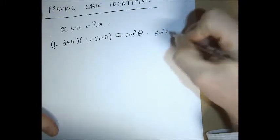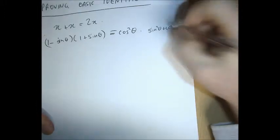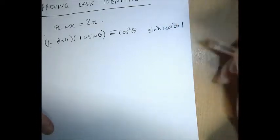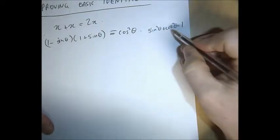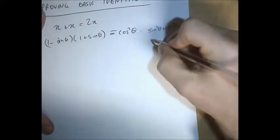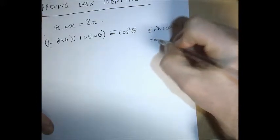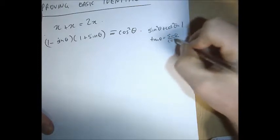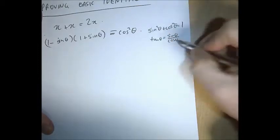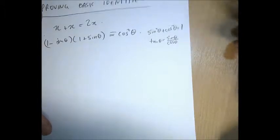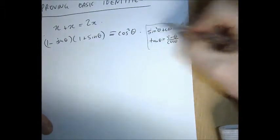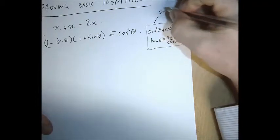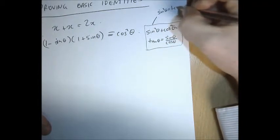The substitutions you get to use are these: if you see sin²θ + cos²θ you can replace it with 1, and if you see a 1 you can replace it with sin²θ + cos²θ. If you see tan θ, you can replace it with sin θ over cos θ. If you see sin θ over cos θ, you can replace it with tan θ. You can also rearrange them — for example, if you see sin²θ you can replace it with 1 minus cos²θ.